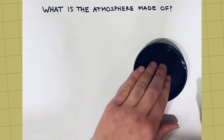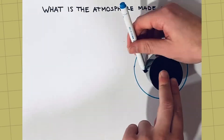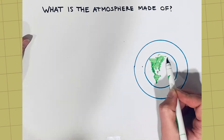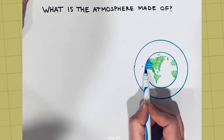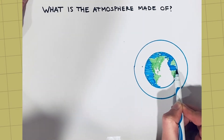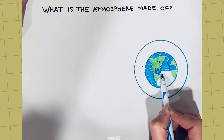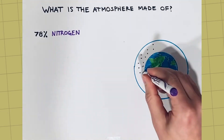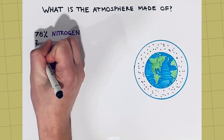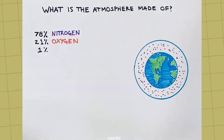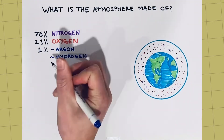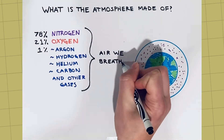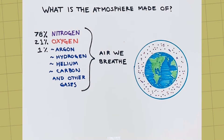Have you ever wondered what Earth's atmosphere is made of? The atmosphere is a protective layer of gases surrounding the entire Earth. This gas is 78% nitrogen, 21% oxygen, and the remaining 1% is argon, hydrogen, helium, carbon, and other gases. This mixture of gases makes up the air we breathe.